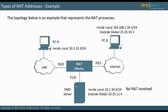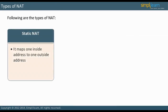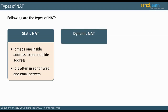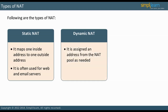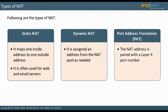Static NAT maps one inside address to one outside address. It is often used for web and email servers because people outside of the LAN require a public address to reach servers, which are often on the LAN. In dynamic NAT, a device is not assigned a NAT address permanently; instead, it is assigned an address from the NAT pool as needed. In port address translation (PAT), the NAT address is paired with a layer 4 port number, which significantly increases the number of NAT addresses. PAT can be dynamic or static.